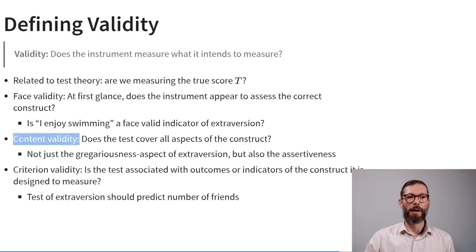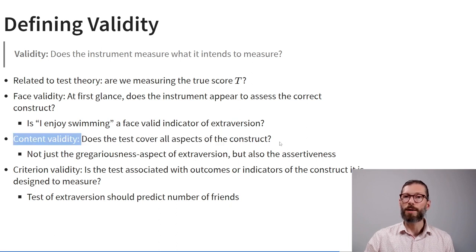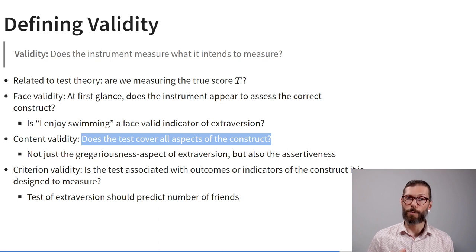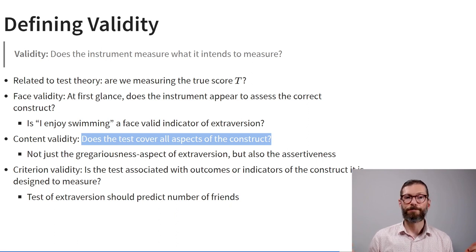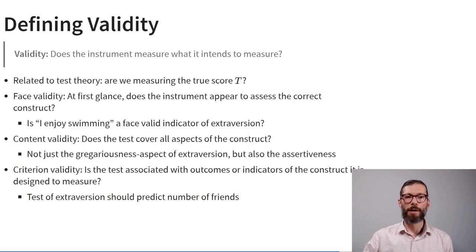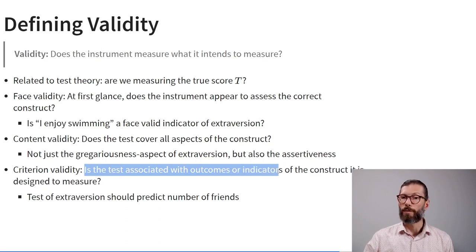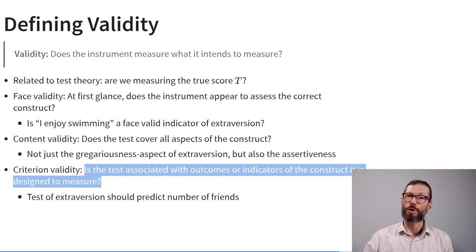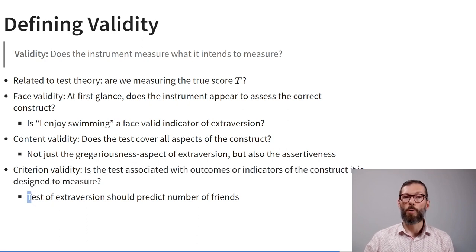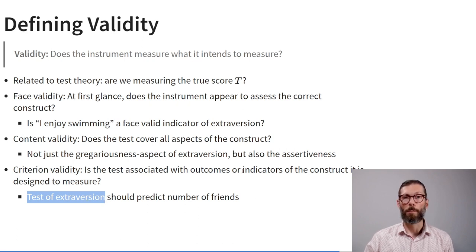A second definition is content validity: does the test cover all aspects of the construct? For example, extraversion has both a gregariousness aspect and an assertiveness aspect — are both covered by the questions? A third definition is criterion validity: is the test meaningfully associated with outcomes or indicators of the construct it's designed to measure? For example, an extraversion questionnaire should be good at predicting someone's total number of friends.